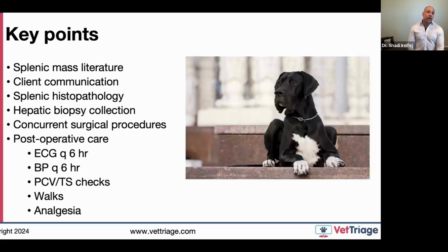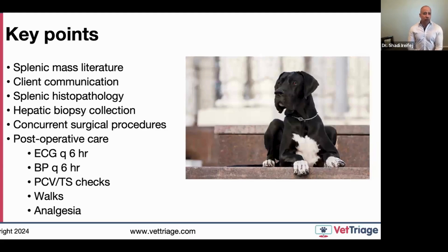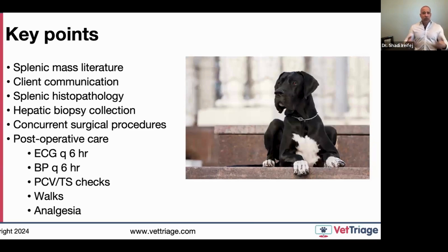Key points to wrap up: the splenic mass literature is difficult to interpret — I've tried to consolidate it into numbers usable for client communication. Client communication is massive for this disease given comorbidities, adjunctive procedures like gastropexy or cystotomy, cancer risk awareness, and post-operative complication risk. All of this must be framed within the client's financial capabilities and their quality-of-life perspective. Always submit the spleen for histopathology regardless of how benign it looks grossly or on ultrasound.